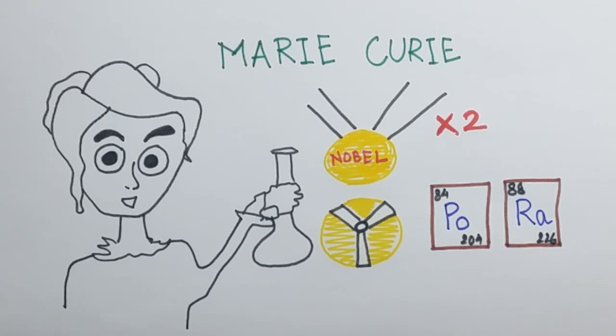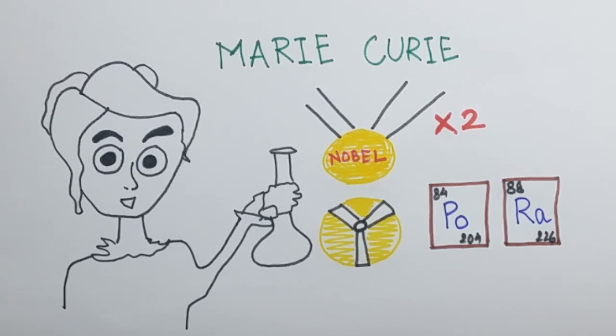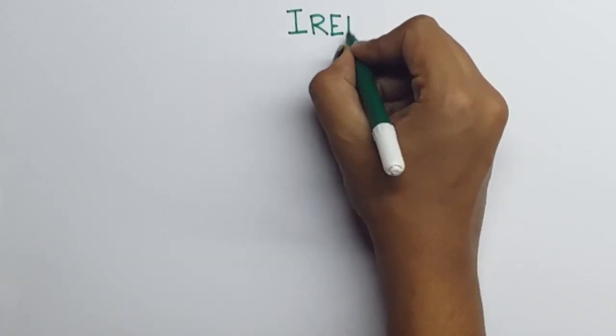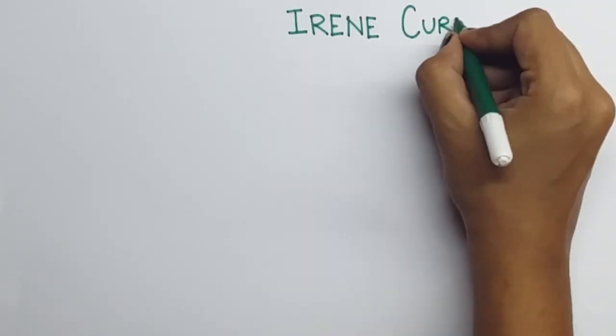And yes, her achievements are amazing. But did you know that her daughter, Irene Curie, is also a Nobel laureate?